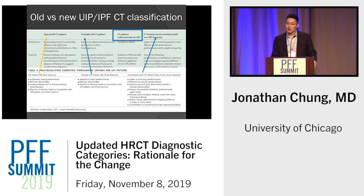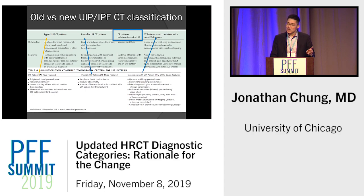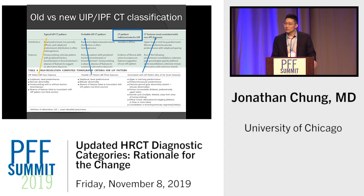The three things we're going to talk about are the changes shown in blue. Number one: possible UIP from the previous guidelines became probable UIP. Number two: the inconsistent UIP pattern is now called non-IPF or alternative diagnosis. And number three: the creation of a fourth category — the CT pattern indeterminate for UIP. We'll focus on the rationale for why these changes make sense.